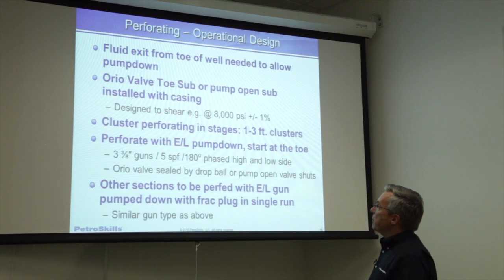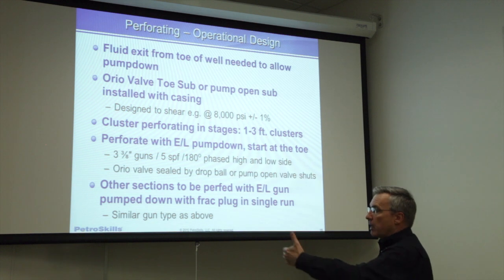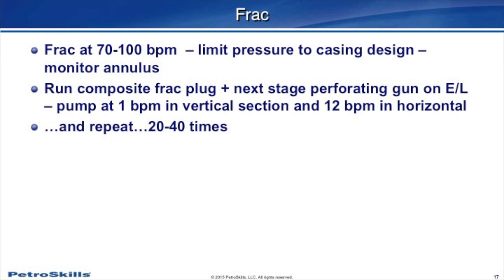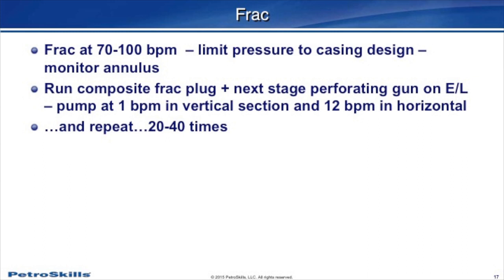We just repeat that step over and over again until we've fracked our way all the way back to the heel. When fracking, we normally frack at very high rates — 70 to 100 barrels per minute. The treating pressure we're allowed to reach is a function of our casing design and will vary from area to area. We run composite frack plugs because they're easier to drill out. When pumping equipment down the hole, we pump at about one barrel per minute through the vertical section and about 12 barrels per minute in the horizontal section.